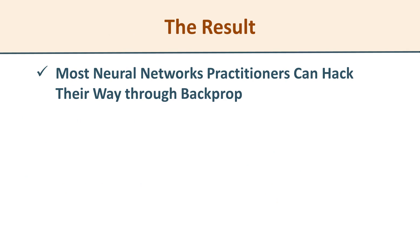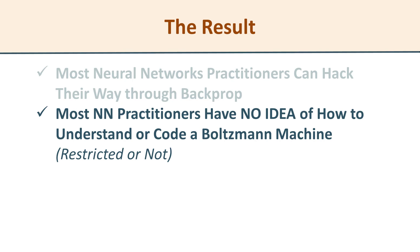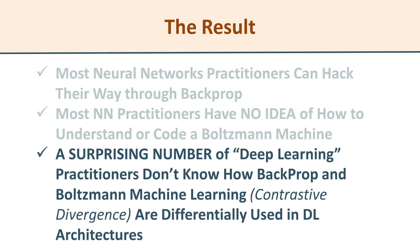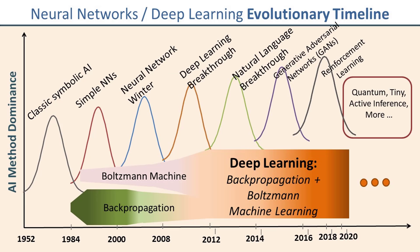The sad but true result of all of this is that most neural networks and deep learning practitioners can pretty much get their way through backpropagation — they may have worked through an online tutorial or even written their own code. Regrettably, very few have a comparable understanding of the Boltzmann machine, and in particular they don't understand the contrastive divergence algorithm or the interplay between these two algorithms in a deep learning architecture like TensorFlow and Keras.